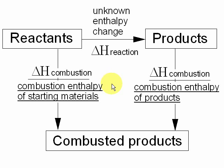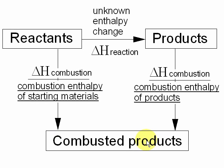You can use a Hess cycle to work out an unknown enthalpy change of a reaction using combustion enthalpies. Here's the scheme where we start from reactants, go to products — we don't know what the enthalpy change is — but you do know what the combustion enthalpy of the starting materials are. That would be the energy change going from the reactants to combusted products. You may also know the combustion enthalpy of the products, which is going from the products to the combusted products.